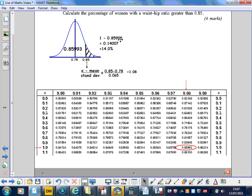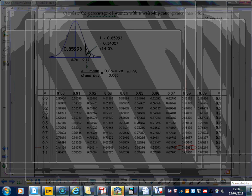OK, so the probability for the tail end is 1 minus 0.85993. That's 0.14007, and then you can just multiply it by 100 to get the percentage, because we're actually asked for the percentage of women with a waist-to-hip ratio greater than 0.85.